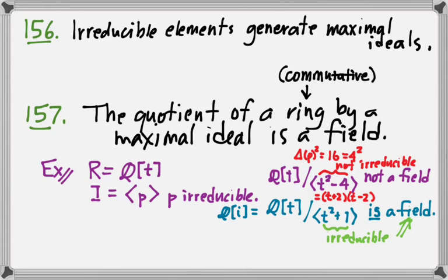So in fact, the statement in 157, even though I'm not asking you to prove this, but maybe we can think about it, the statement in 157 goes both ways. That not only do I get a field when I take a quotient by a maximal ideal, but also, if I take a quotient by any ideal and I get a field, then that ideal must have been maximal.